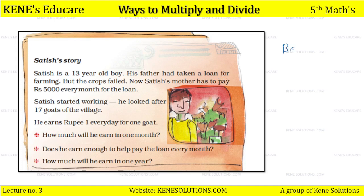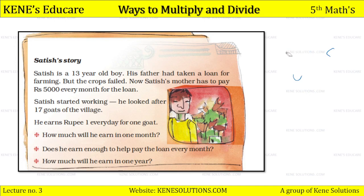A loan means, for example, we take some amount from the bank. Then we have to pay back that amount with some interest to the bank at a particular time — for example, 5000 every month to the bank. After that, Satish started working; he looks after 17 goats of the village.